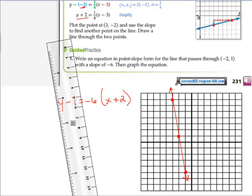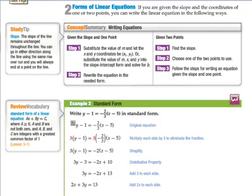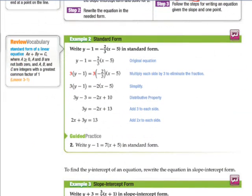Let's take a look at another one. If you're given the slope and the coordinates of one or two points, you can write the linear equation in the following ways. So if we're given the slope and one point, we can substitute the value of m and let the x and y coordinates be x and y, and then just rewrite the equation in the needed form. This is why I like point-slope form: it gives us the ability to move from form to form pretty easily. If we're given two points, we're always going to find the slope first, choose one of the two points to use—it doesn't matter which—and then we're going to use point-slope form to transform the equation into whatever form we want.